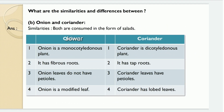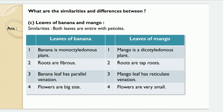Jawar has fibrous roots and moom has tap roots. Now the similarities and differences between onion and coriander: both are consumed in the form of salads. The differences are: onion is a monocotyledonous plant but coriander is a dicotyledonous plant. Onion has fibrous roots and coriander has tap roots. Onion leaves do not have petioles but coriander leaves have petioles, and onion is a modified leaf but coriander has lobed leaves.